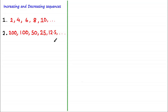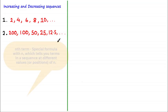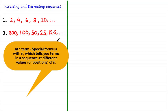Now what about if you were given the nth term of a sequence and you were asked to prove whether or not the sequence was increasing or decreasing? Well, the nth term of a sequence is a special formula which tells you the term of a sequence at a particular position n, where n is a positive integer.